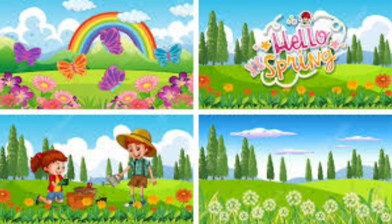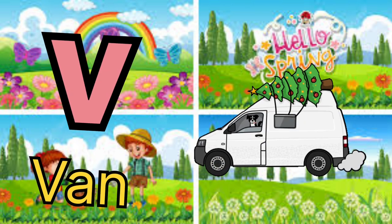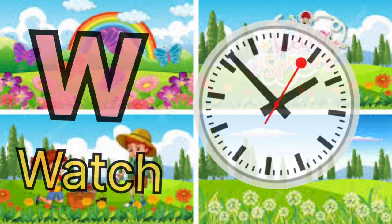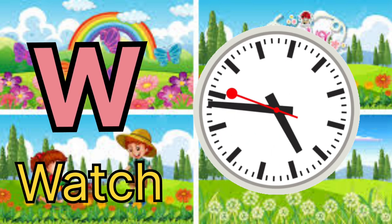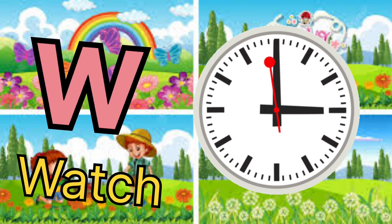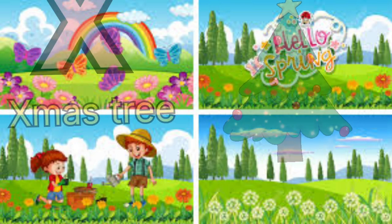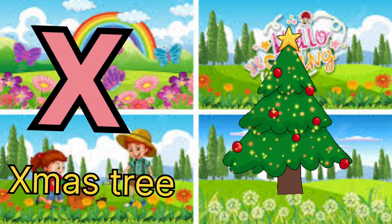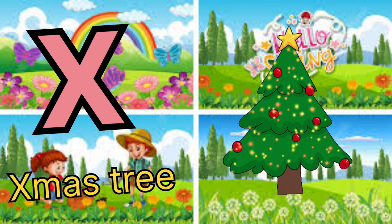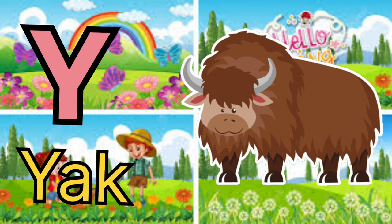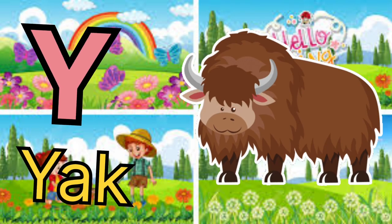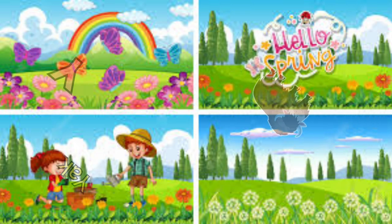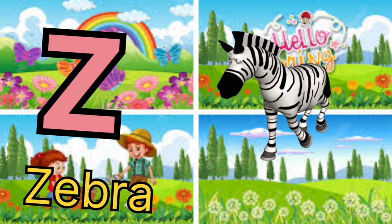T for tiger, U for umbrella, V for van, W for watch, X for accessory, Y for yo-yo, Z for zebra.